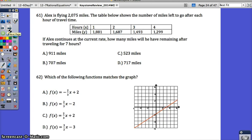At number 61, Alex is flying 2,075 miles. The table below shows the number of miles left to go after each hour of travel. This is the total amount. After one hour, he has 1,881 miles left. After two hours, he has this much left. We can see what's happening to the miles. Over time, it's decreasing. If Alex continues at this current rate, how many miles will he have remaining after traveling seven hours? You basically want to extend this table out. We have up to four hours. What if we could find out up to five, up to six, and then up to seven?